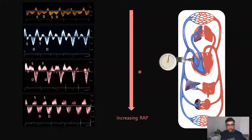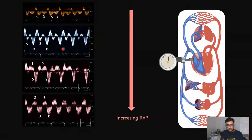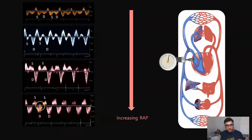As right atrial pressure increases, there is more resistance to blood flow during systole — you can imagine this better by thinking of tricuspid regurgitation, which often accompanies volume overload. The TR jet entering the right atrium during systole raises pressure there, offering resistance to the S wave, so its amplitude becomes smaller and smaller. Eventually the S wave is completely above the baseline, and with further elevation of right atrial pressure, only the D wave remains below the baseline — meaning blood flows toward the heart only during diastole. This is called the D-only pattern, or severe congestion.